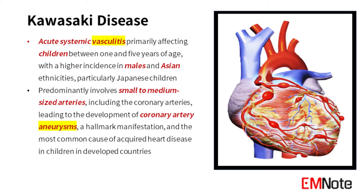Kawasaki disease is an acute systemic vasculitis primarily affecting children between 1 and 5 years of age, with a higher incidence in males and Asian ethnicities, particularly Japanese children. The disease predominantly involves small to medium-sized arteries, including the coronary arteries, leading to the development of coronary artery aneurysms — a hallmark manifestation and the most common cause of acquired heart disease in children in developed countries.